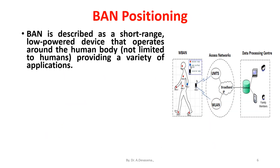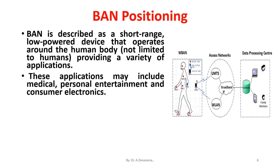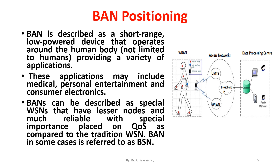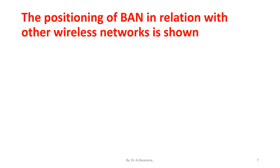BAN position. BAN, that is body area network, is described as a short range, low powered device that operates around the human body, not limited to humans, providing a variety of applications. These applications may include medical, personal entertainment, and consumer electronics. BANs can be described as special wireless sensor networks that have fewer nodes and are much more reliable, with special importance placed on quality of service as compared to traditional wireless sensor networks. BAN in some cases is referred to as BSN, that is body sensor network. The positioning of BAN in relation with other wireless networks is shown.